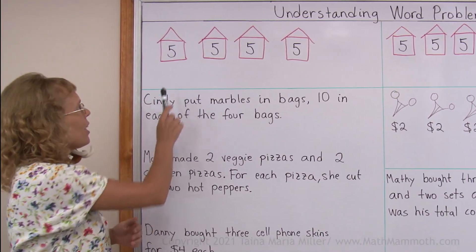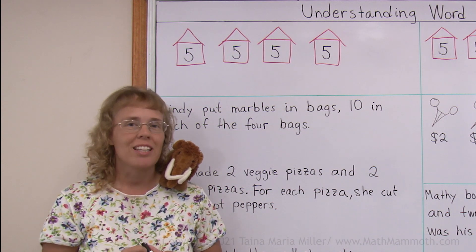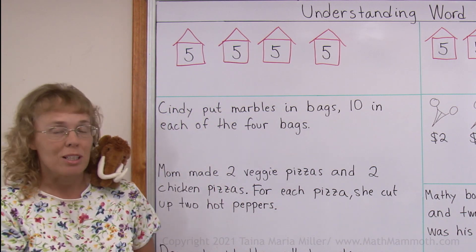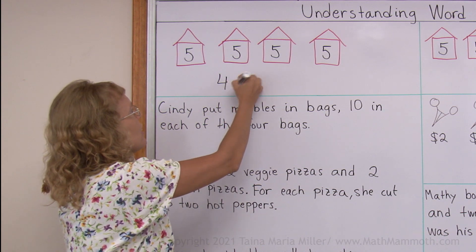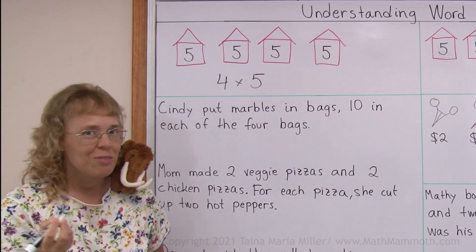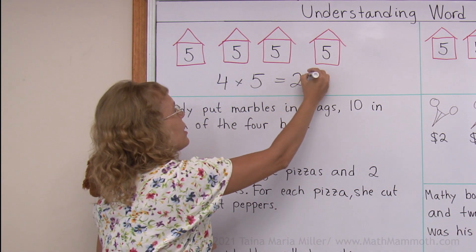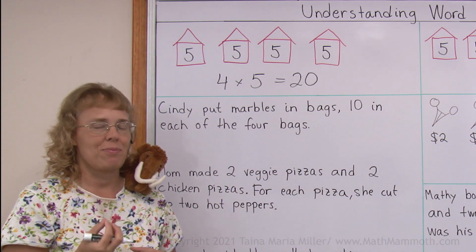For example, I have here four houses and in each of those houses there are five people living in them. So we can write a multiplication: 4, because there are four houses, times 5, because there are five people in each. And then we multiply and we get twenty. There are twenty people in total in those houses.